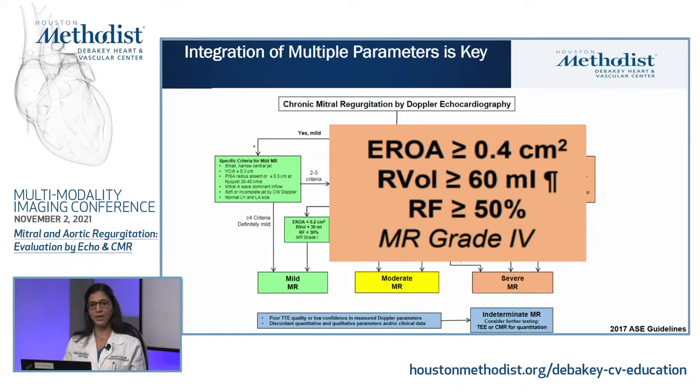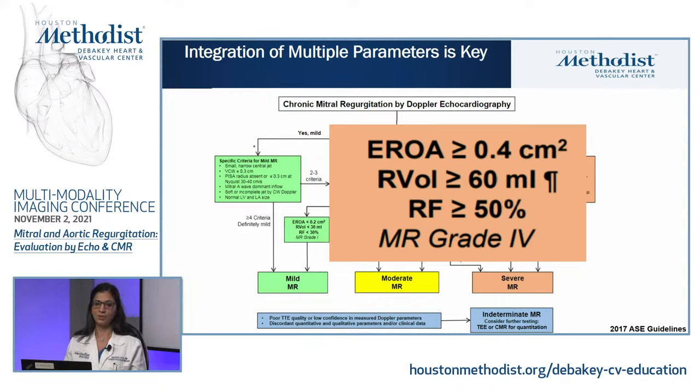If parameters don't match, images are technically difficult, or the mechanism is unclear, the next step is further evaluation by TEE or CMR. TEE or CMR assessment is also indicated when there is discrepancy between echo findings and clinical presentation. Consequences of MR to evaluate include LA enlargement, LV dysfunction, and pulmonary hypertension.